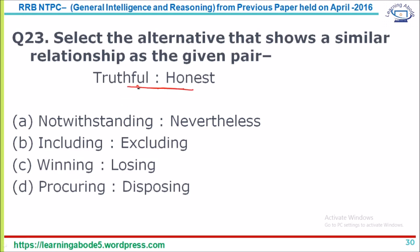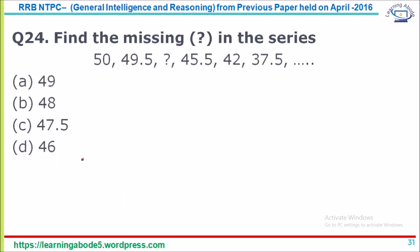Question 23: Analogy — Truthful and Honest are similar in meaning. Find the pair with the same relationship among the options. Including/excluding are opposite; winning/losing are opposite; procuring/disposing are opposite. Notwithstanding and Nevertheless are similar in meaning — just like truthful and honest. The other three option pairs all have opposite meanings. Answer option A: notwithstanding and nevertheless.